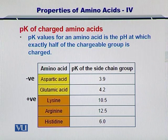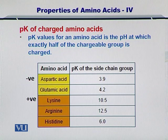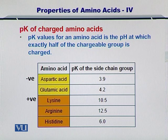The pK of charged amino acids is simply the pH at which half of the molecules of the amino acid are charged while the other half are not charged. pK can be different for different amino acids. Given 100 molecules of an amino acid, if 50 of them are charged and 50 are not charged, then that pH will be the pK value for that amino acid. The negatively charged amino acids — aspartic acid and glutamic acid — have pK values of 3.9 and 4.2.